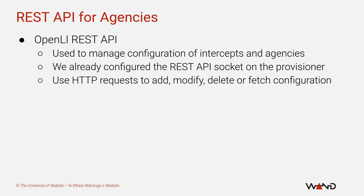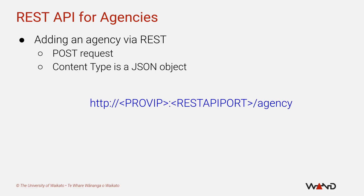You may remember that when we configured the provisioner we set up an IP address and port number for the REST API — this is where we will be sending our HTTP requests to tell the provisioner about our new mock agency. Any time you want to add new configuration to OpenLI, you will need to send an HTTP POST request. When adding an agency, the content of that request must be a JSON object, and the fields within that object will describe the properties of the agency. The POST request must be sent to the URL shown on the slide, where provip is replaced with your provisioner IP address and rest-api-port is replaced with the port you configured for the REST API — I chose port 8080.